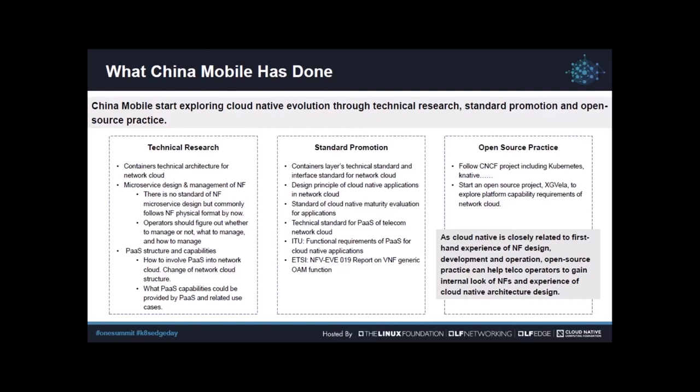This page is a conclusion on cloud native evolution. We have been doing technical research on container, microservice, and PaaS. For container, we have worked out a technical architecture and done testing trials. Although our attitude on introducing containers to our core cloud is relatively conservative, a technical standard is ready for use, and we have started using it on edge. For microservice, design and management is the key topic. By looking at network function design from many partners, we conclude there is no standard on network function microservice design.